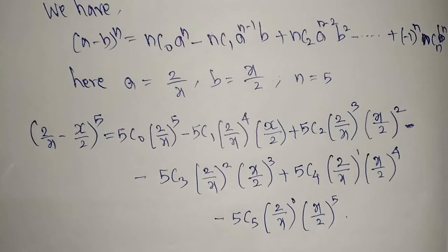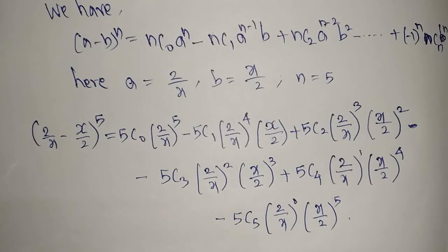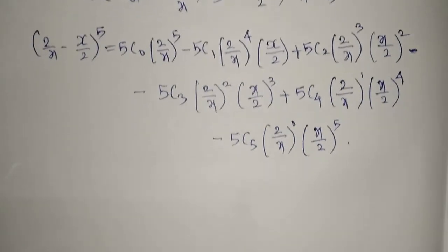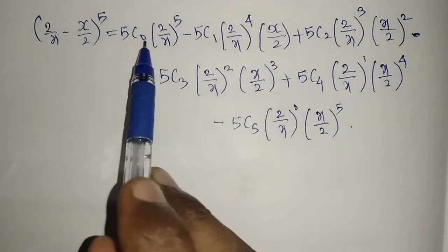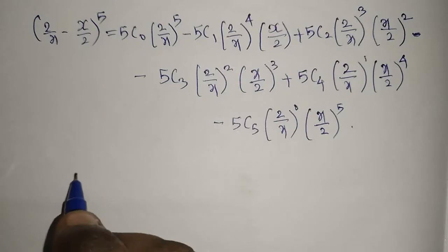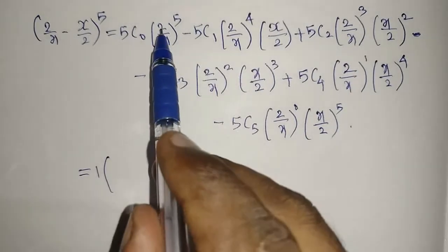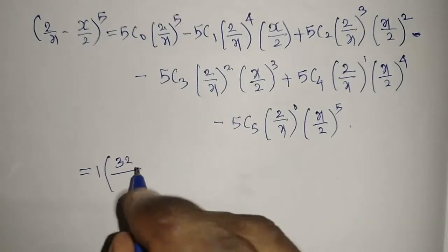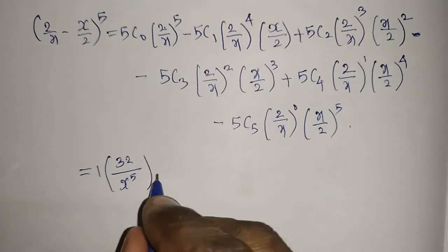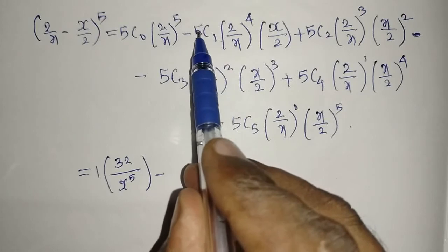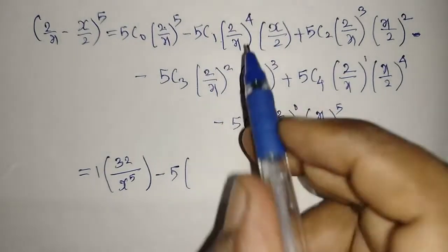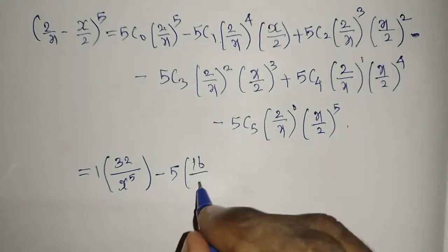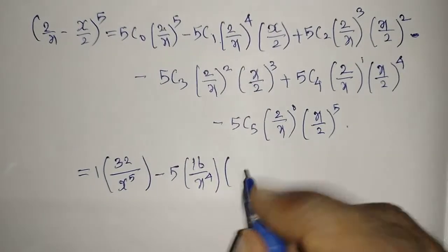Now we will start to simplify. 5C0 is 1. The power is common for both 2 and x, so 2^5 = 32 divided by x^5, and for the next term 2^4 = 16 divided by x^4, multiplied by (x/2).